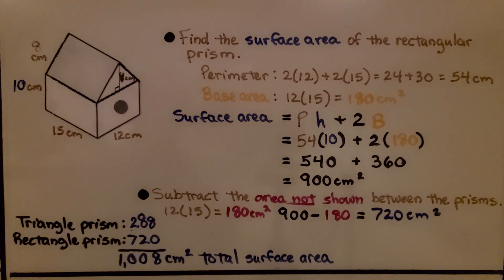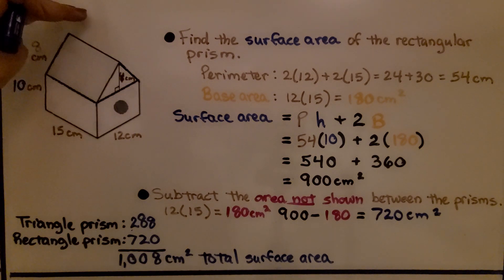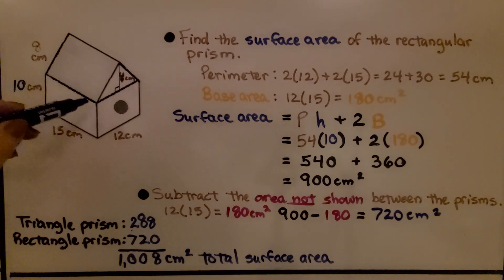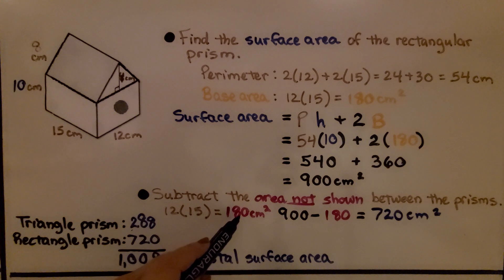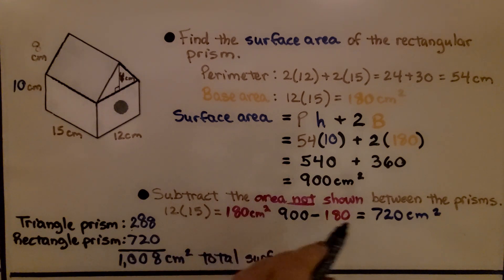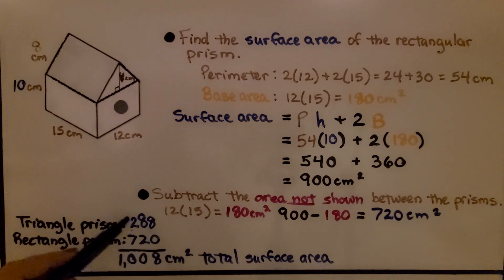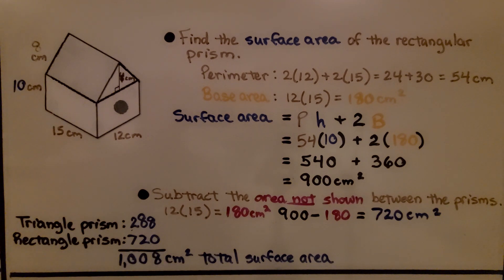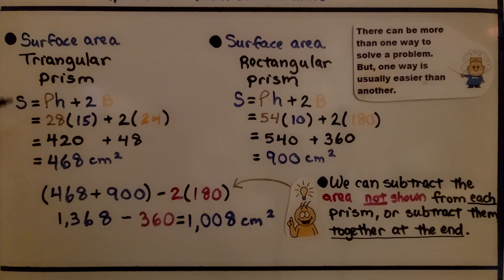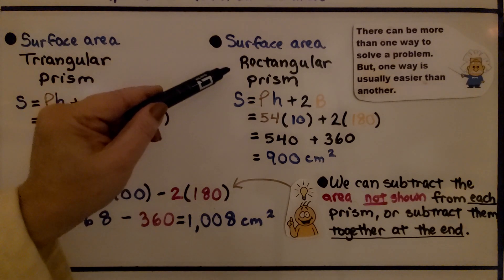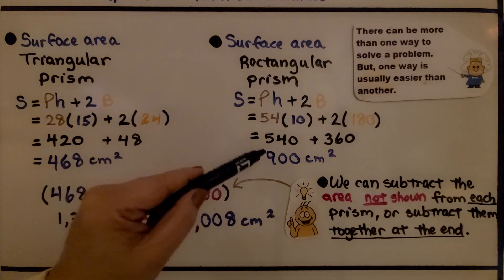We subtract the area not shown between the prisms. If we lifted the roof off, we'd see the flat top of the rectangular prism that's hidden. That area is 12 × 15 = 180 cm². Subtracting from 900 gives 720 cm². Adding 288 and 720 gives a total surface area of 1,008 cm².